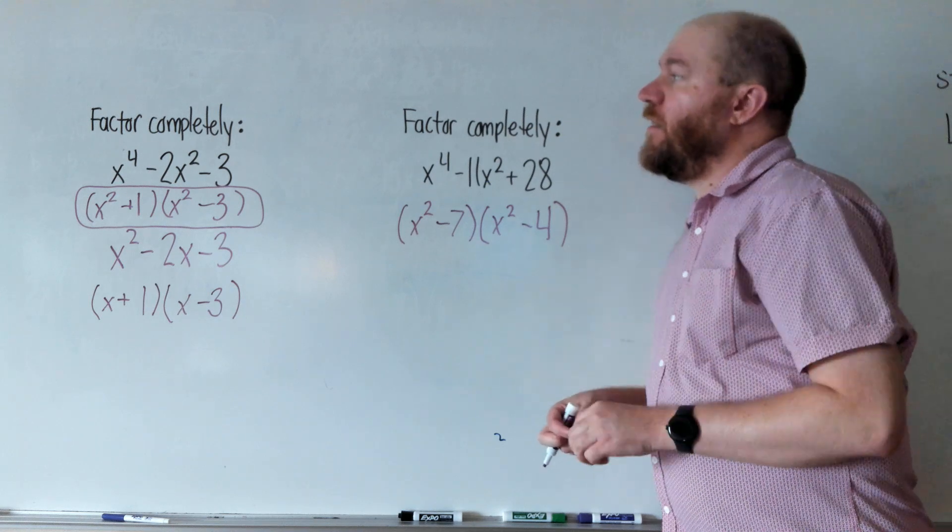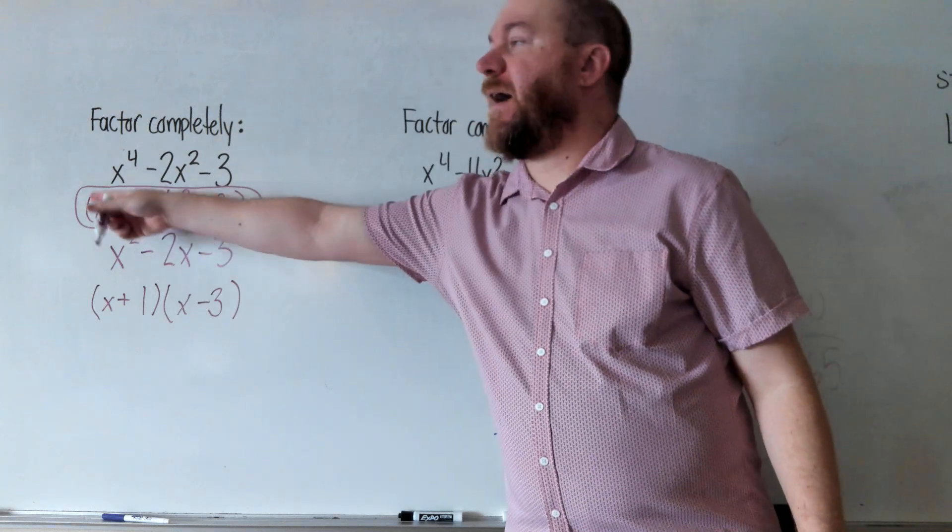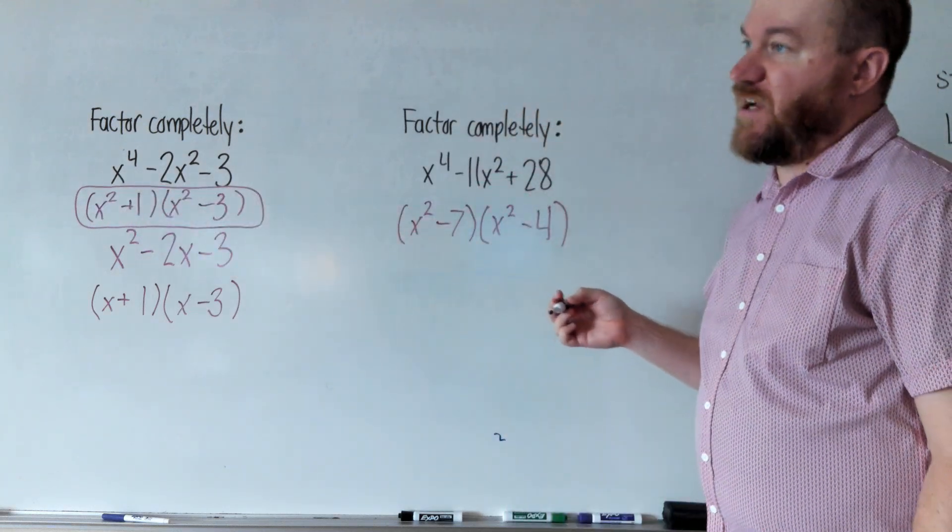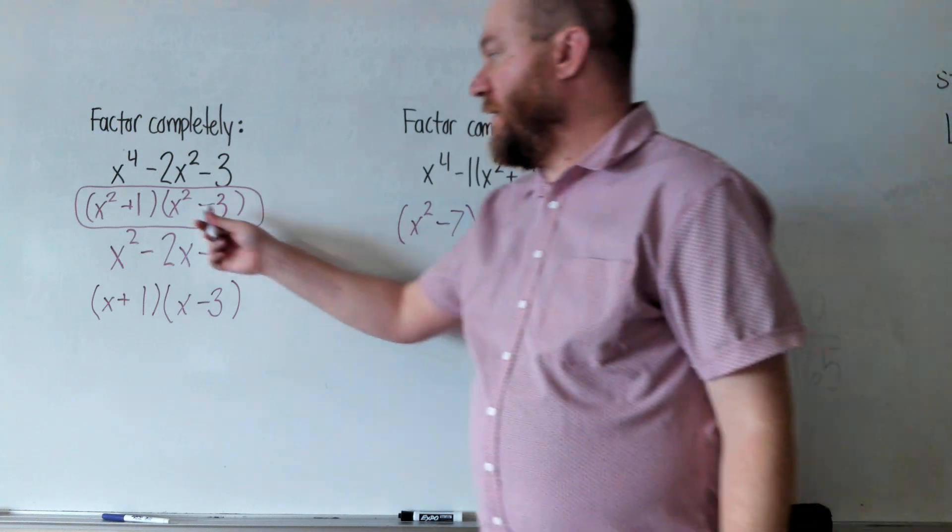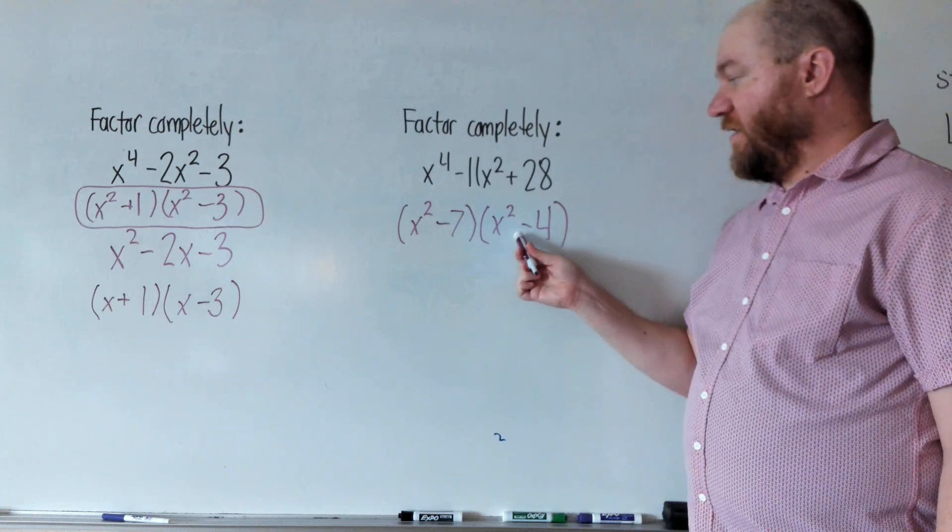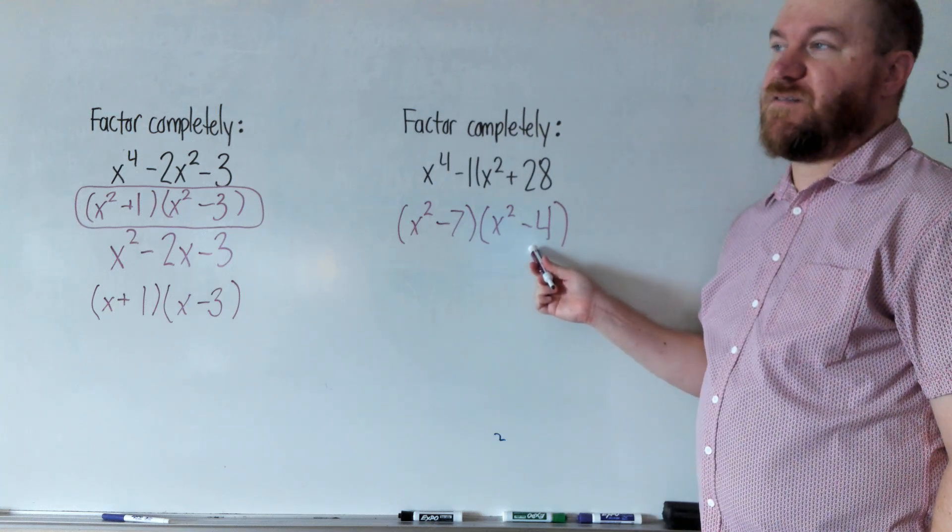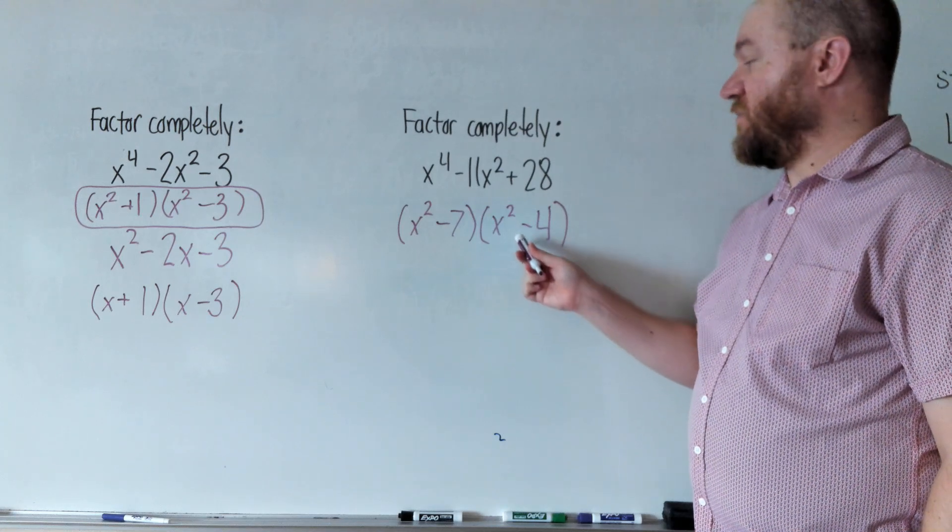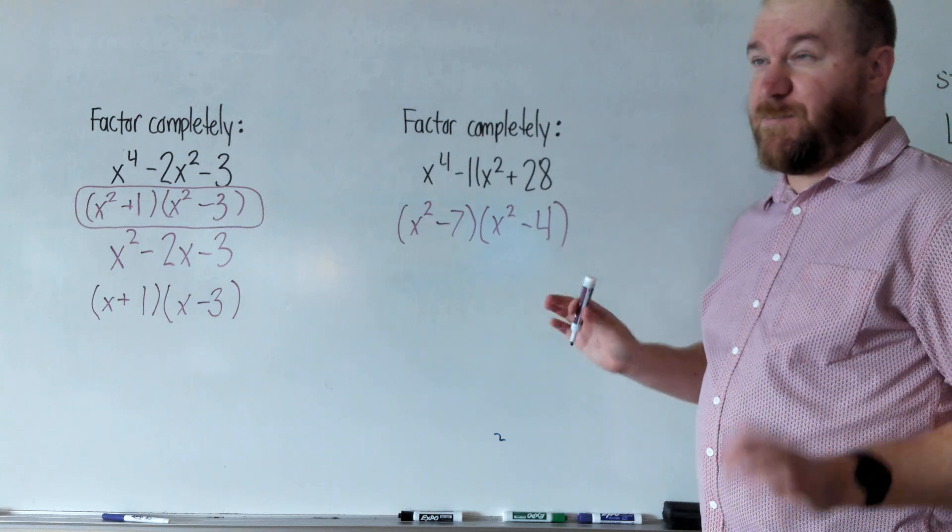This question is not done. Both of these said factored completely. So before I box my answer, I need to check and make sure, can I factor some more? Neither of these can be factored anymore, but this one right here, that one can be factored some more. That's a difference of two squares. A difference of two squares means that we have a minus sign, and both terms are completely perfect squares.